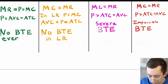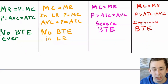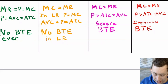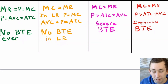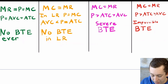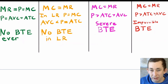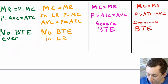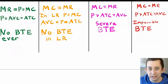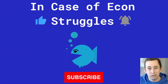Barriers to entry describes how tough it is for a firm to enter the market. In perfect competition there are no barriers to entry. In monopolistic competition there are no barriers in the long run, though there may be some in the short run. In oligopoly or duopoly there are severe barriers to entry — not impossible, but very hard. In monopoly there are impossible barriers to entry — you are not getting into this market.